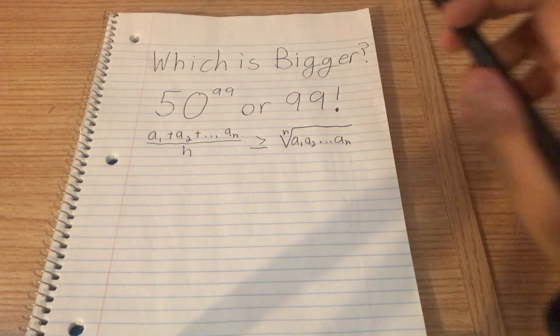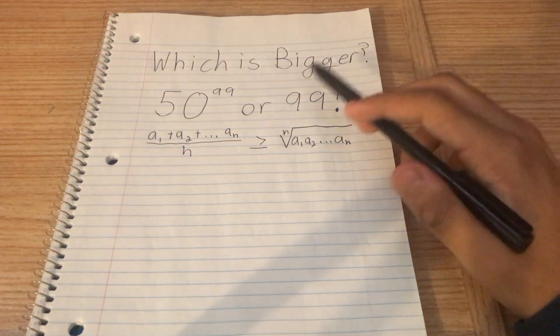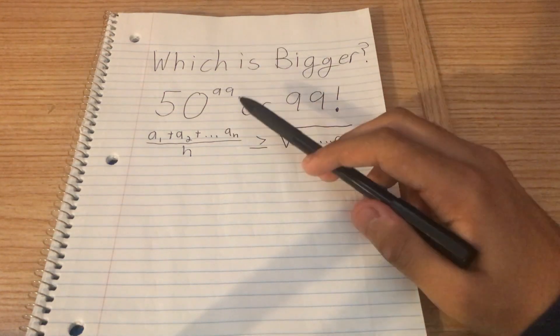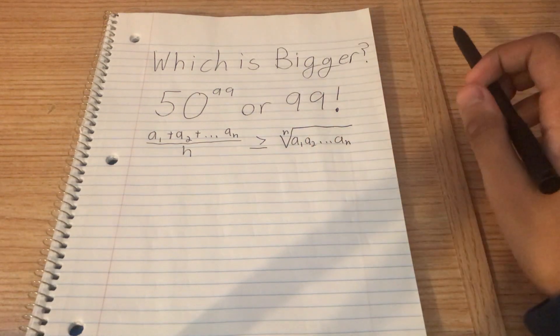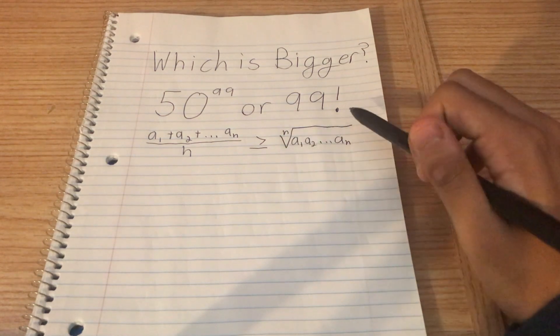But the way that we can do it right now is by using something called the AM-GM inequality. And what that is, is if you have a sequence A1, A2, A3, all the way to AN, then the arithmetic mean of that sequence is greater than or equal to the geometric mean.